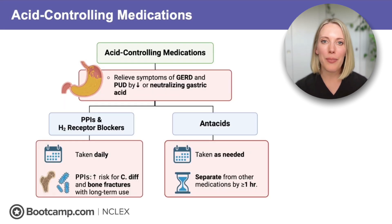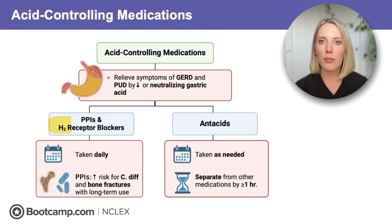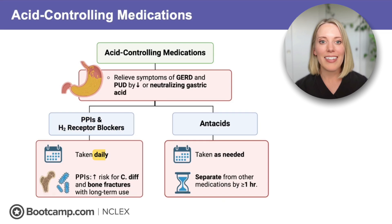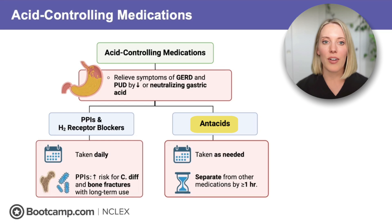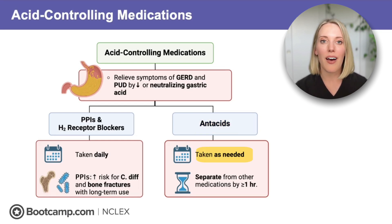Let's take a look at the big picture for the medications used to manage these conditions. We can manage acid in two ways. We can use PPIs like omeprazole or H2 receptor blockers like ranitidine to decrease acid production. These are taken daily and provide long-term suppression of gastric acid to treat conditions like GERD and peptic ulcer disease. We can also give antacids, which neutralize gastric acid.